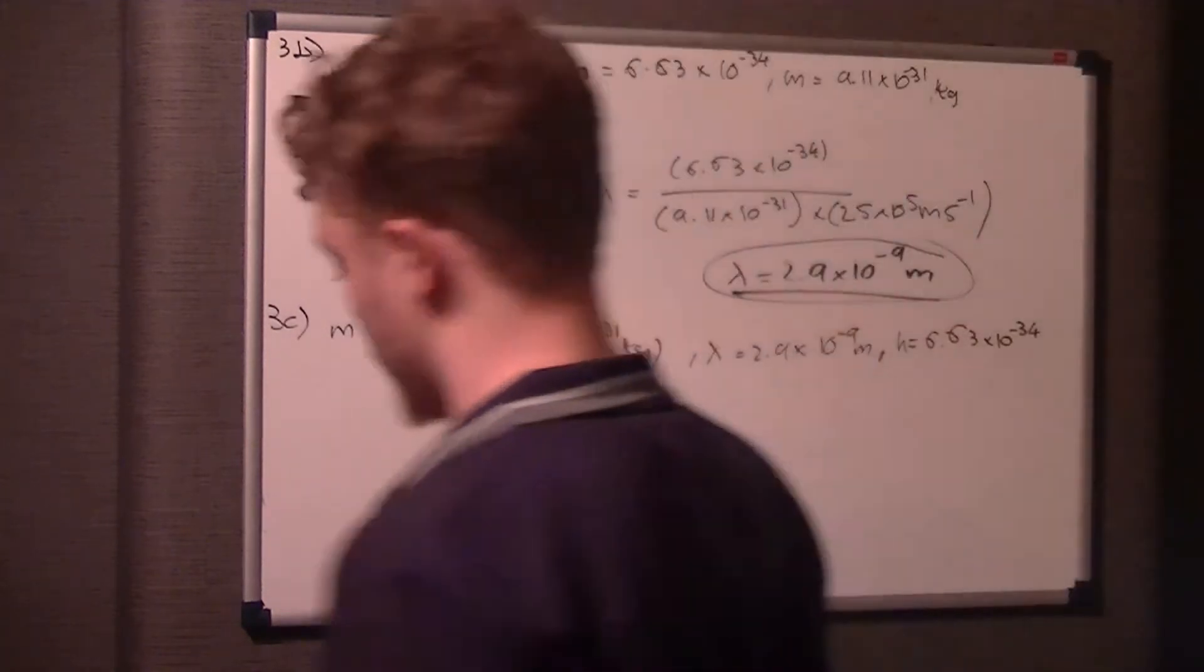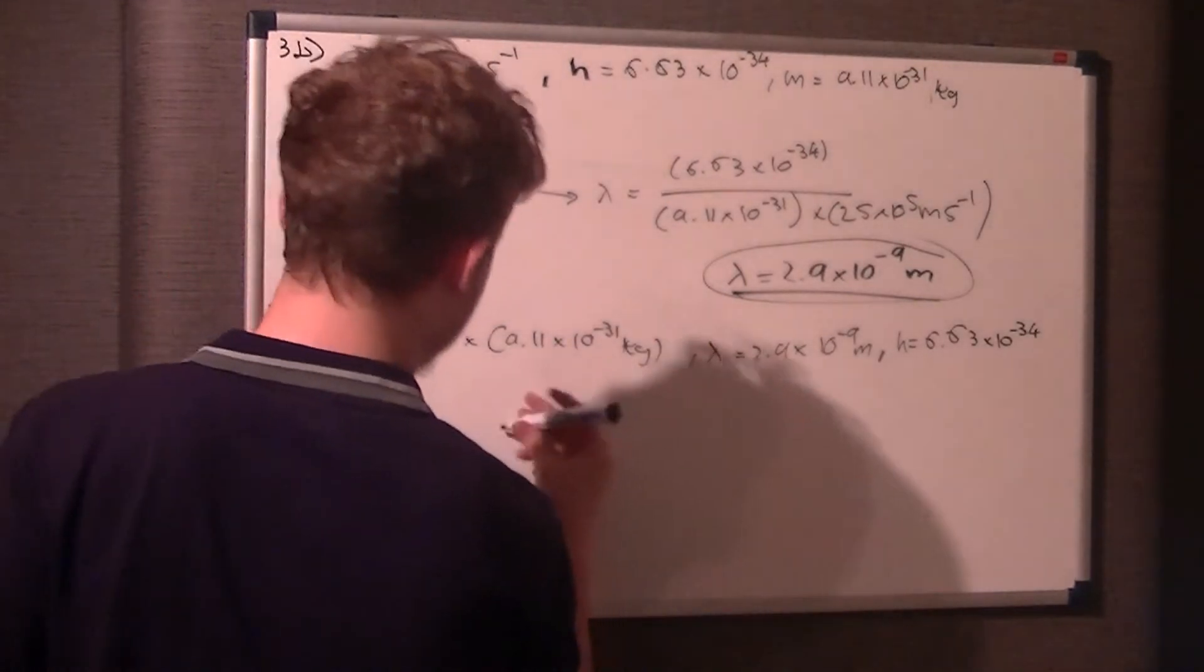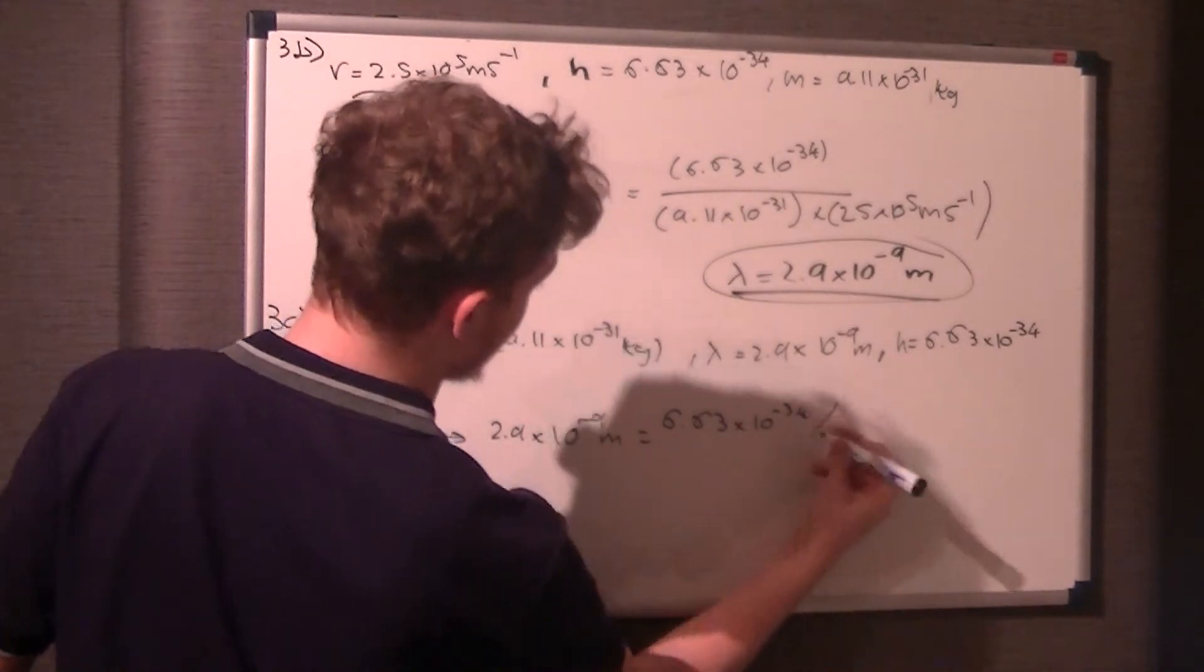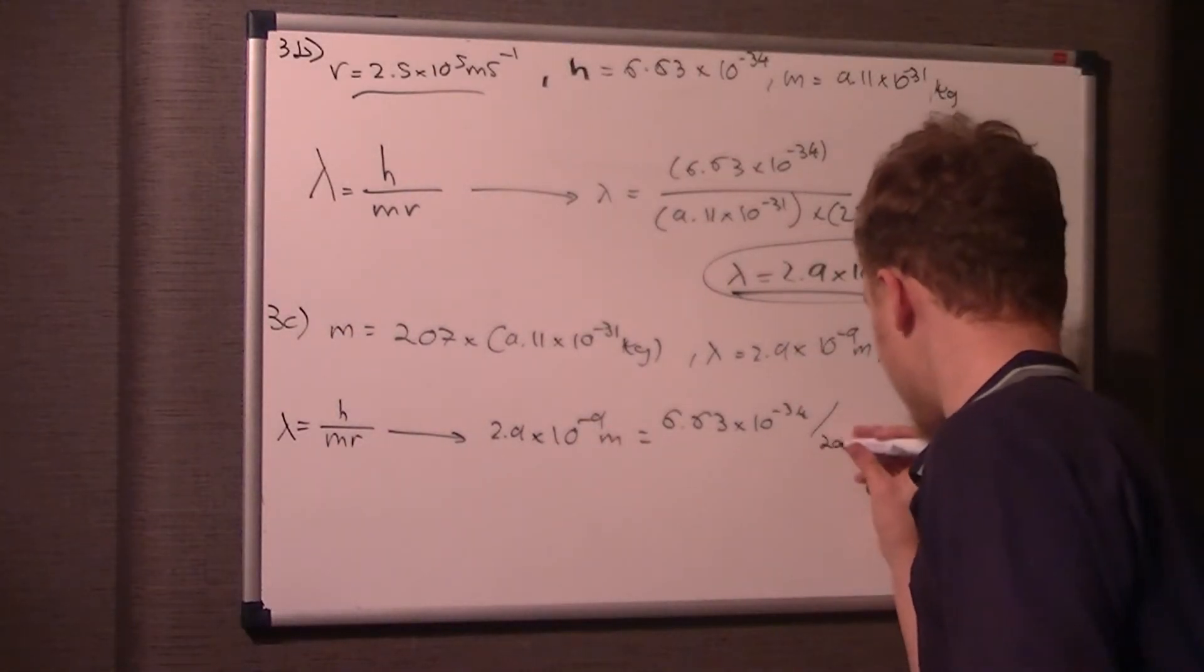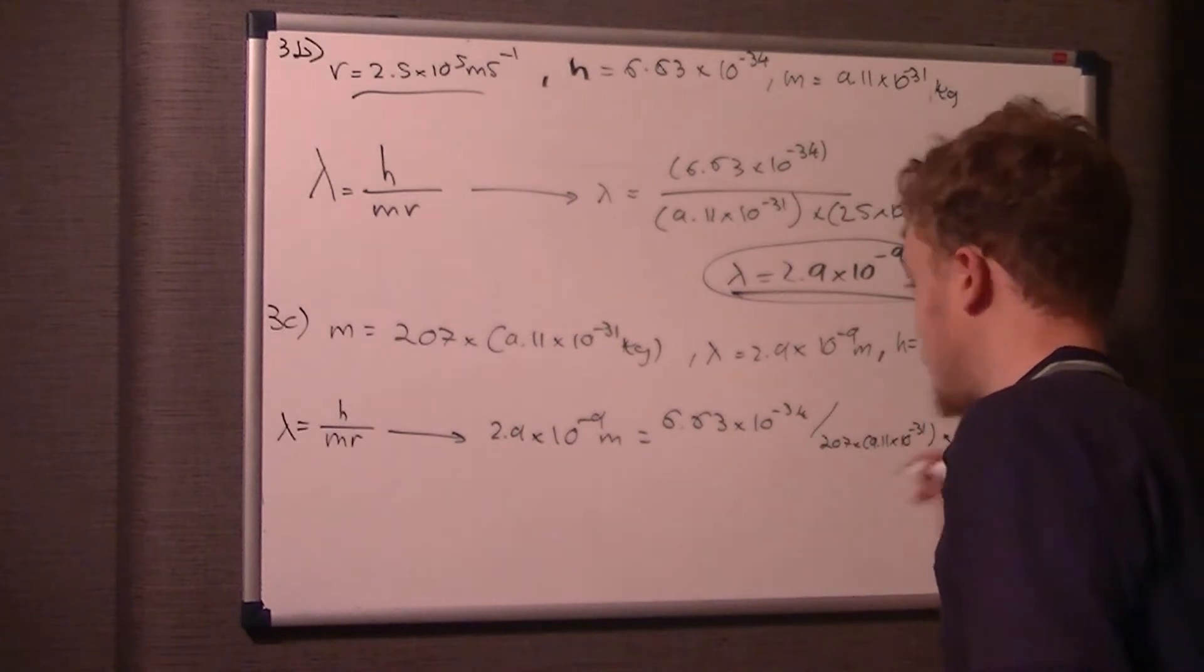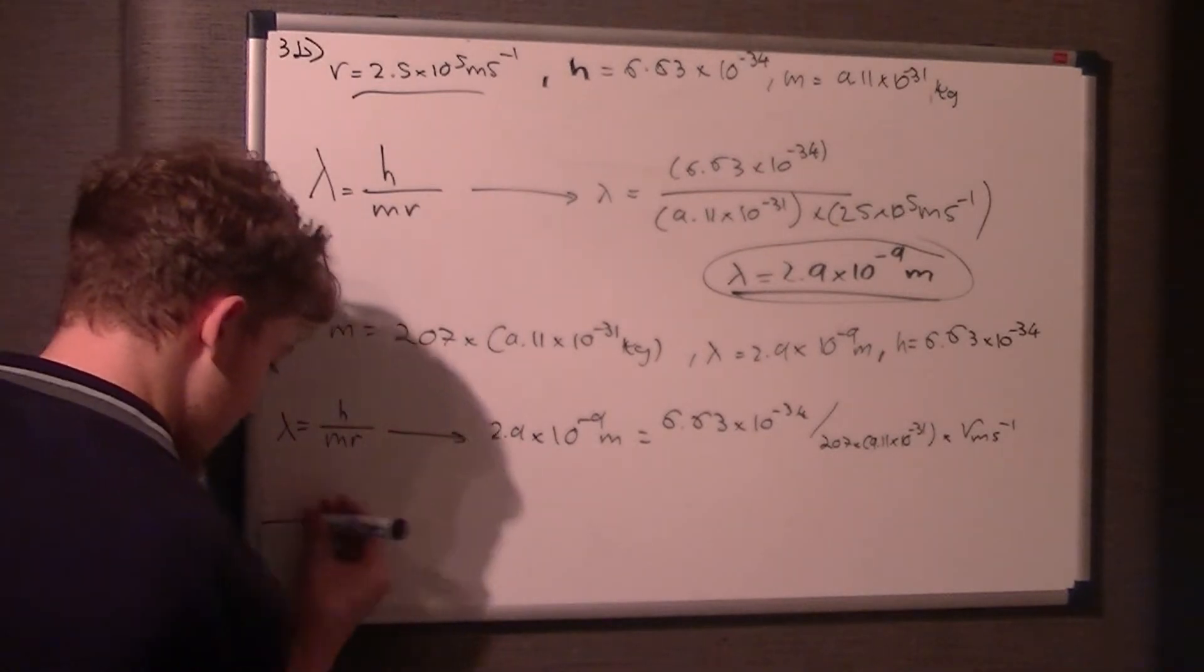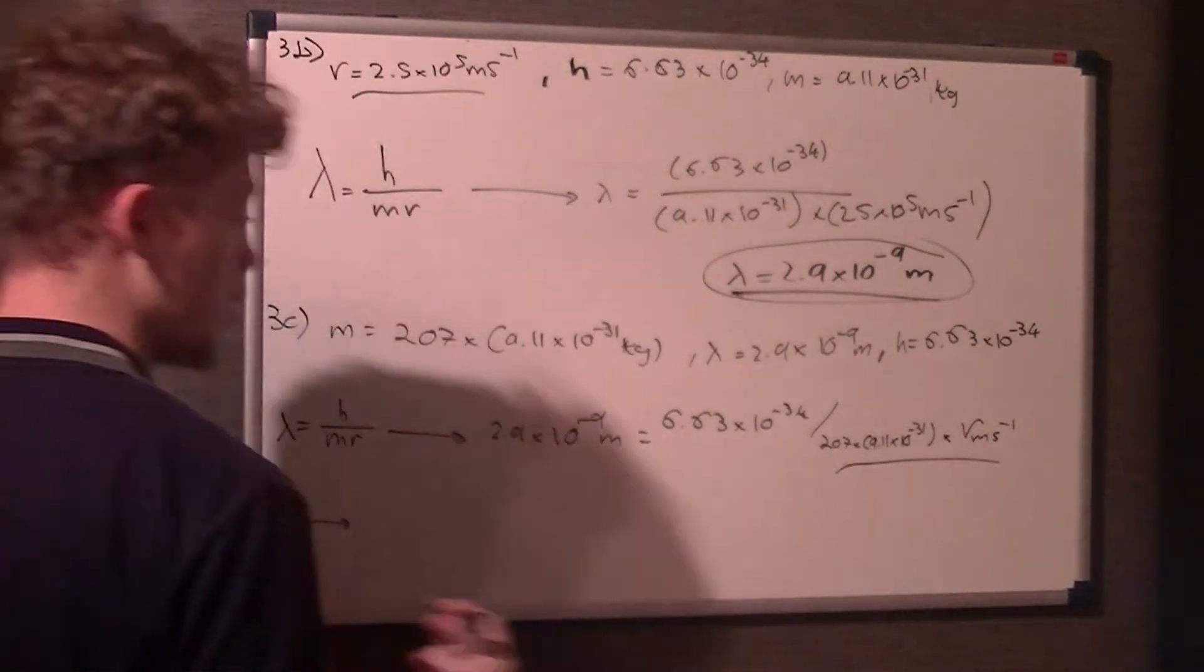We've got all the information we need, now just sub in what we know. 2.9 times 10 to the minus 9 meters equals 6.63 times 10 to the minus 34 over mass times velocity. The mass was 207 times 9.11 times 10 to the minus 31 times the velocity, which we'll leave as v meters per second.